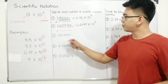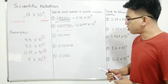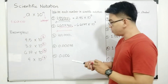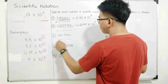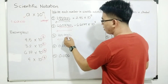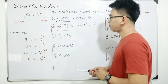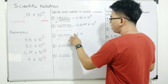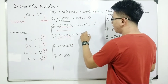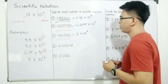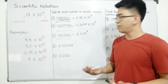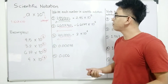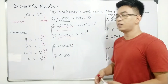Item number 3 is 20,000. Your starting point is here and this will be your end point. Our movement is from right to left — we count 1, 2, 3, 4. So our answer is 2 times 10 raised to the 4th power. Items 1, 2, and 3 are all whole numbers and we expressed them in scientific notation.